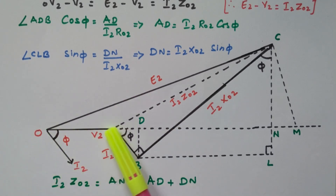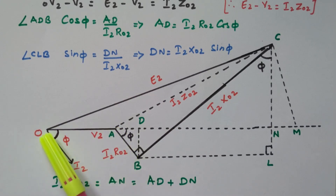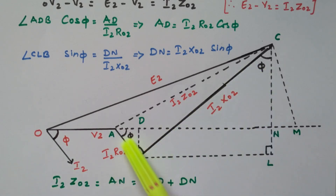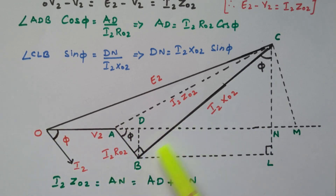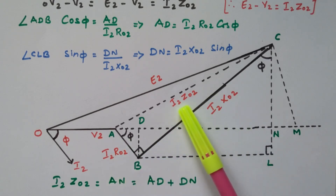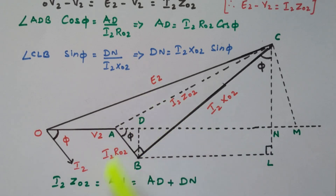The secondary voltage V2 is taken as reference. The secondary current is lagging the voltage by angle φ. We have the resistive drop in phase with the current and the inductive drop leading by exactly 90 degrees. The sum of resistive drop and inductive drop is the impedance drop, and this impedance drop added to V2 gives E2.